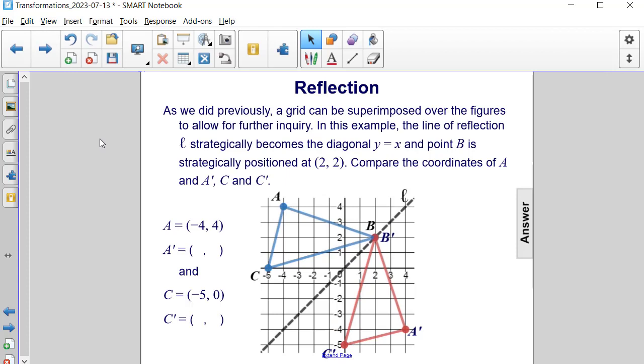As we did previously, a grid can be superimposed over the figures to allow for further inquiry. In this example, the line of reflection L strategically becomes the diagonal Y equals X. And point B is strategically positioned at (2, 2), which is a point on this line Y equals X.